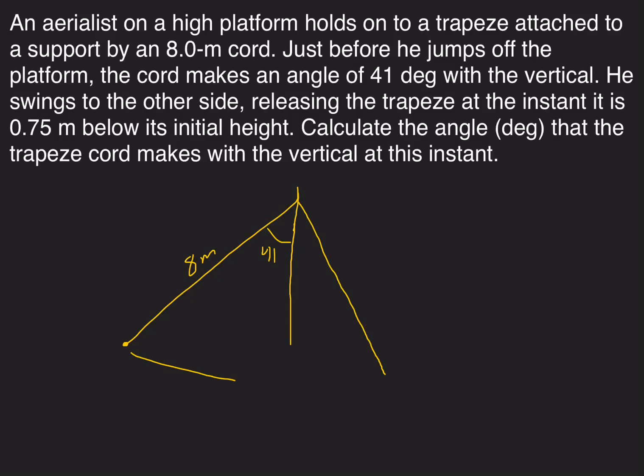So I'm going to draw a horizontal line from the original height of the thing. He swings down this way and gets right here, where he is 0.75 meters below this original height.